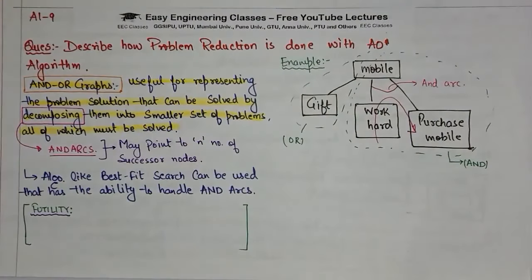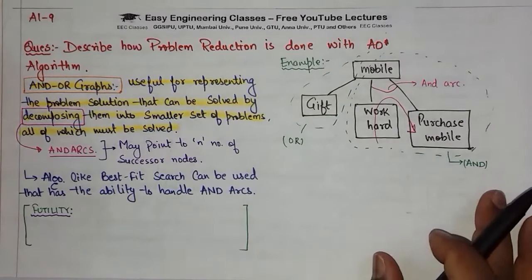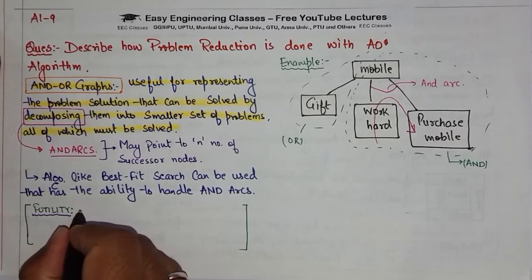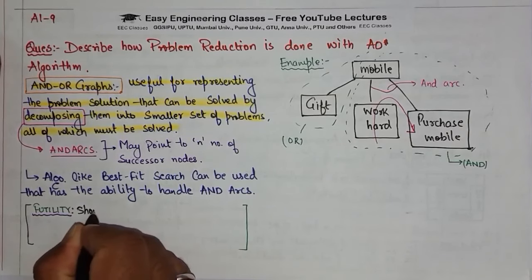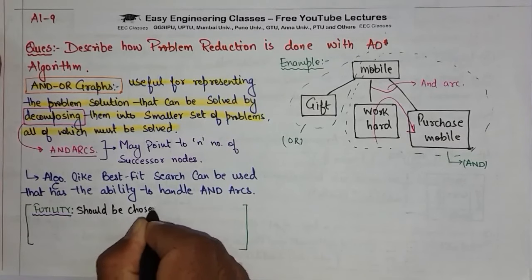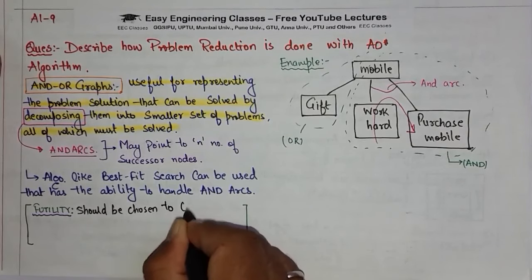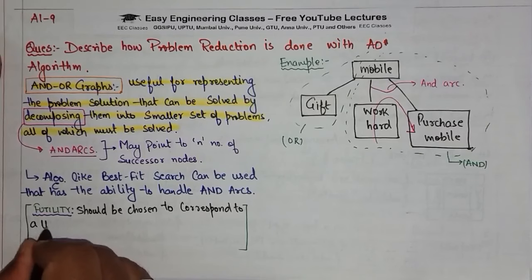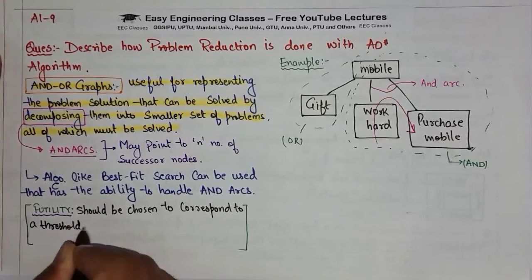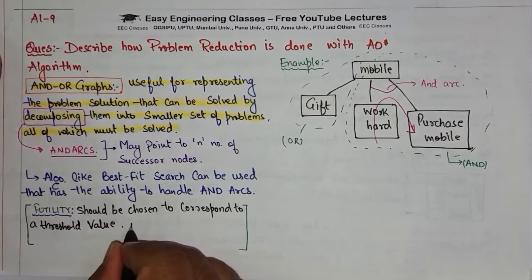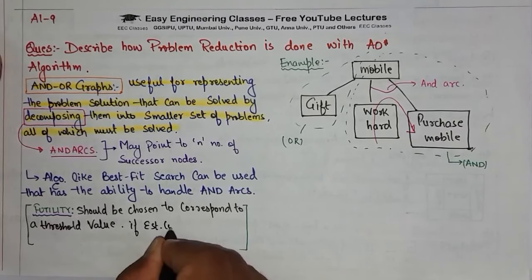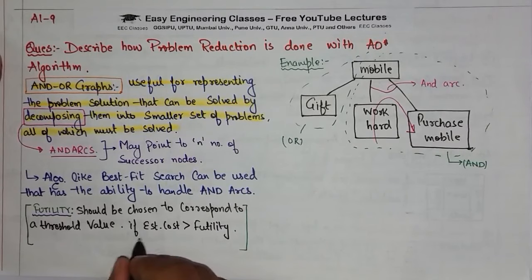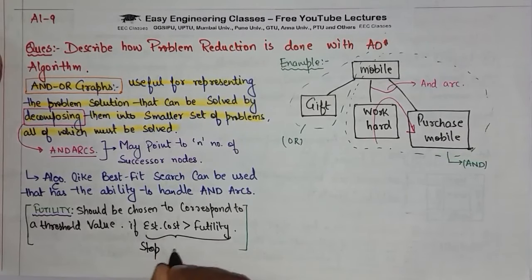In AND-OR graph or AO star algorithm, there is a concept of threshold futility. It should be chosen to correspond to a threshold value. If the estimated cost is more than the futility, then we will stop the search.